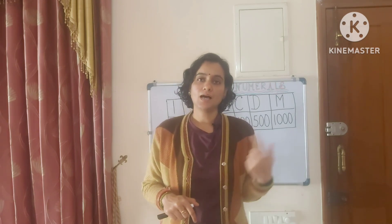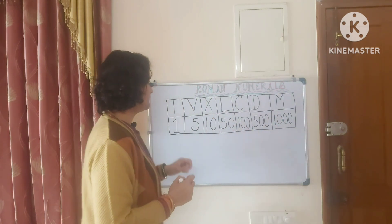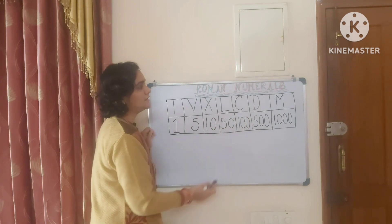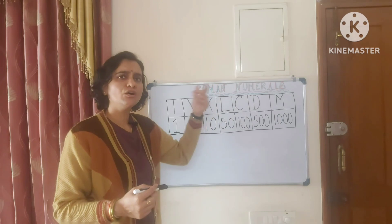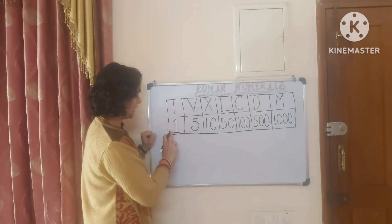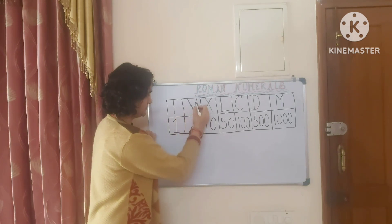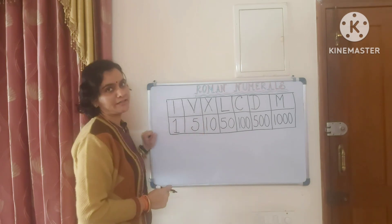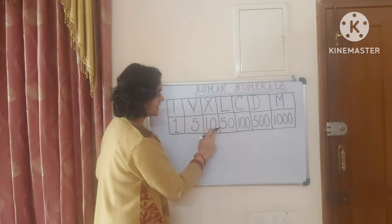So we'll start with Roman numerals. There are seven symbols that are used currently. Present day, there are only seven alphabets that we match with our Hindu-Arabic numerals. The first one is I — I is equal to our 1, value is equal to 1. Next is V — V's value is equal to our 5. Then comes X — X's value is 10.